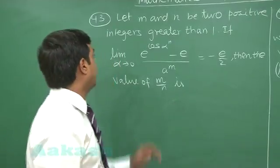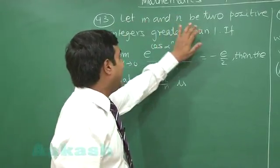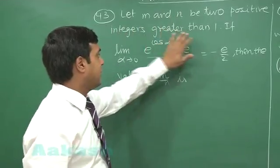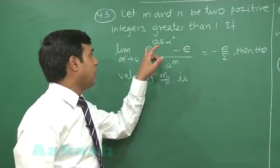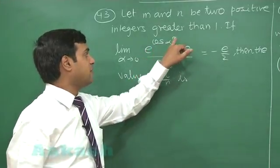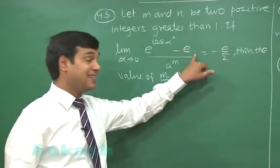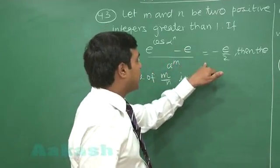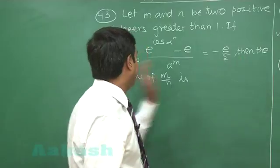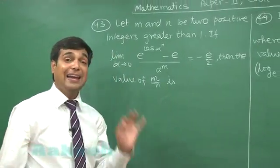Question number 43. Let m and n be two positive integers greater than 1. If limit alpha approaching to 0, e to the power cos alpha to the power n minus e upon alpha to the power m is equal to minus e by 2, then the value of m by n is.